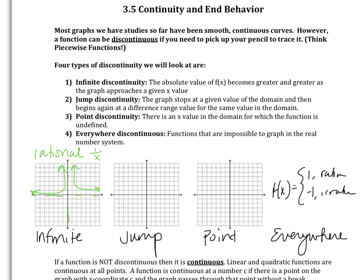Jump discontinuity is the graph stops at a given value in the domain and then begins at a different value in the range for the same value of the domain. So an example here would be like the piecewise functions we saw. For example, something like this. Okay, so you had to pick up your pencil to draw that. It's continuous to the left of 0 and then at 0 it jumps to a new point and is continuous after 0, but it's discontinuous in between.